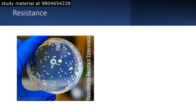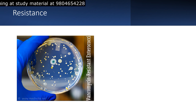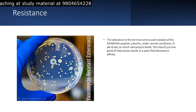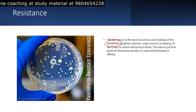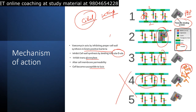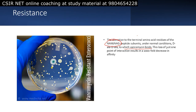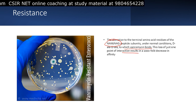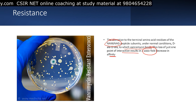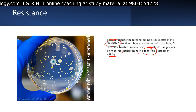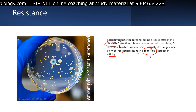Vancomycin resistance has already been developed in some bacteria, which is why a resistance section is included here. Under normal conditions, vancomycin binds to the terminal amino acid residues of the NAM-NAG peptide subunit — specifically the two D-alanine residues. The loss of just one point of interaction results in a thousand-fold decrease in vancomycin activity. If one of the two D-alanine residues is removed, the effectiveness of vancomycin is reduced thousand-fold. The interaction point of vancomycin is therefore critically important.